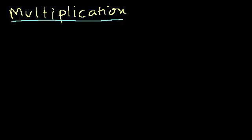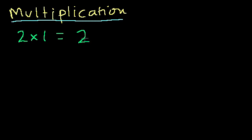So what are the multiplication tables? That's just all of the different numbers times each other. Let's do a little review. What is 2 times 1? That is equal to 2 plus itself one time, so this is equal to just 2. I could also write this as 1 plus 1, which also equals 2. So 2 times 1 is 2.